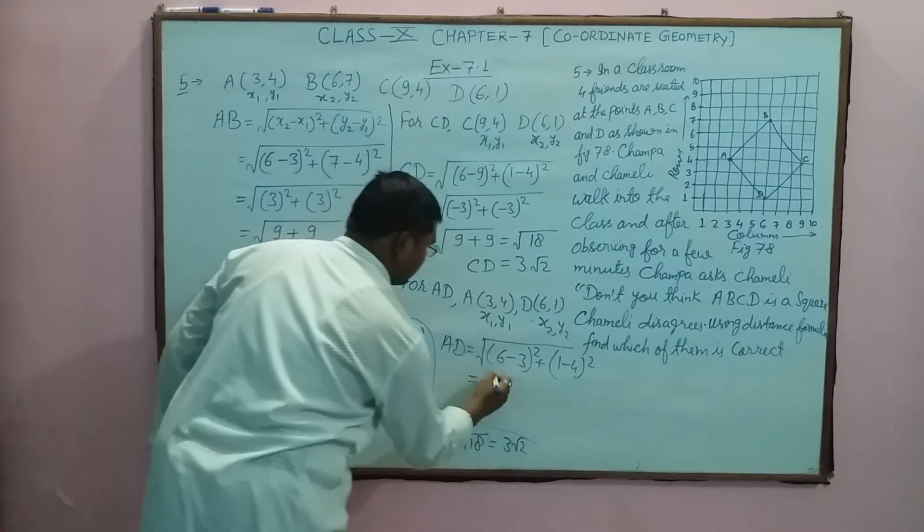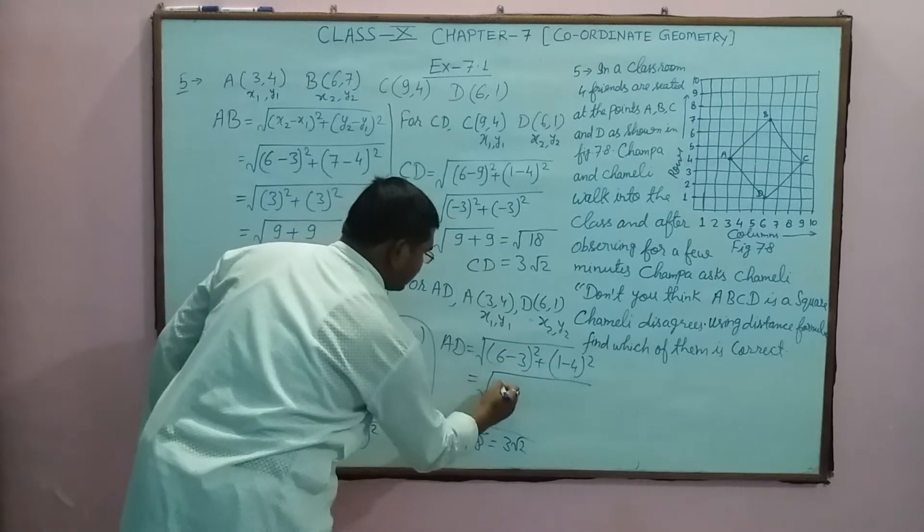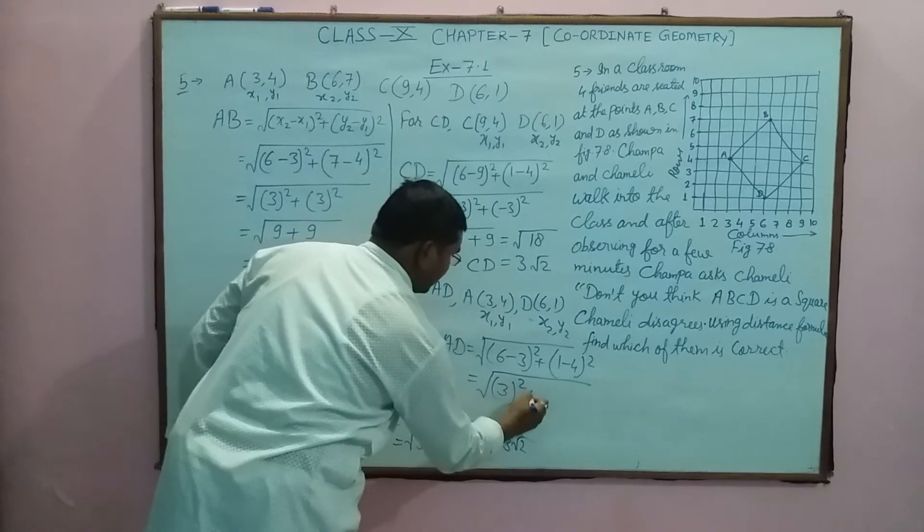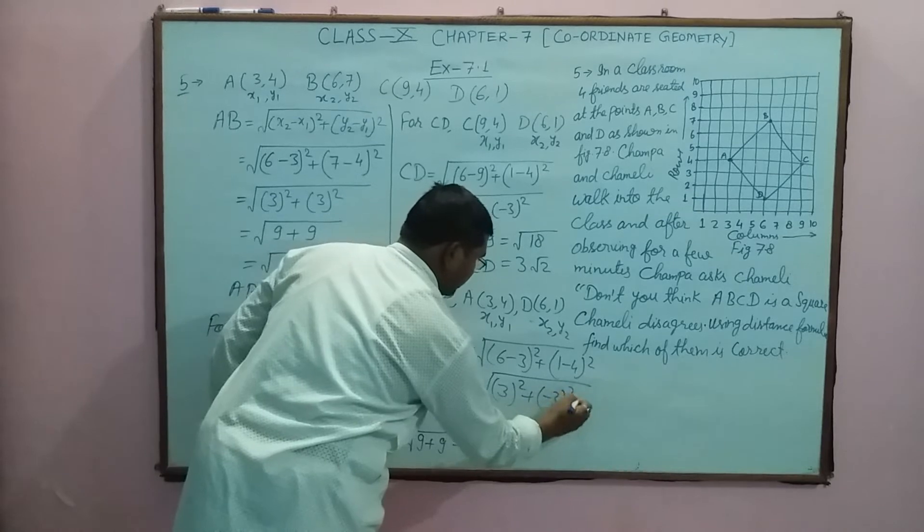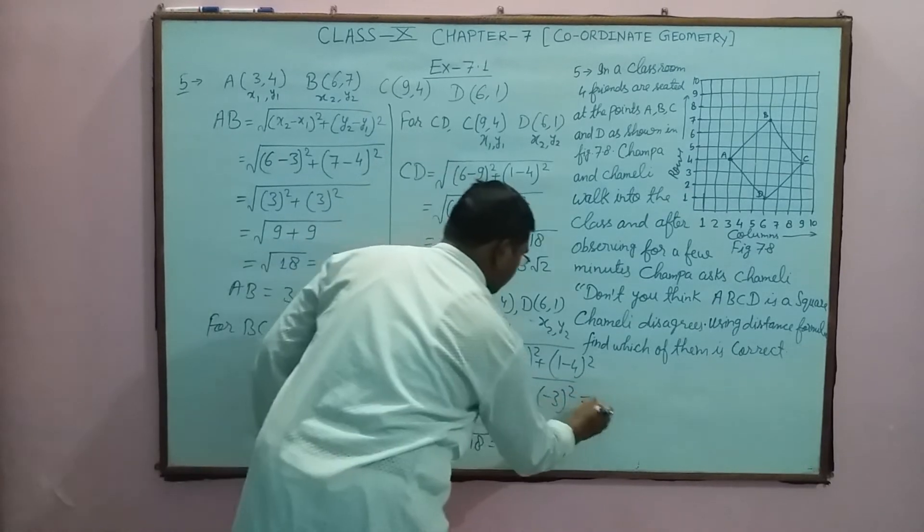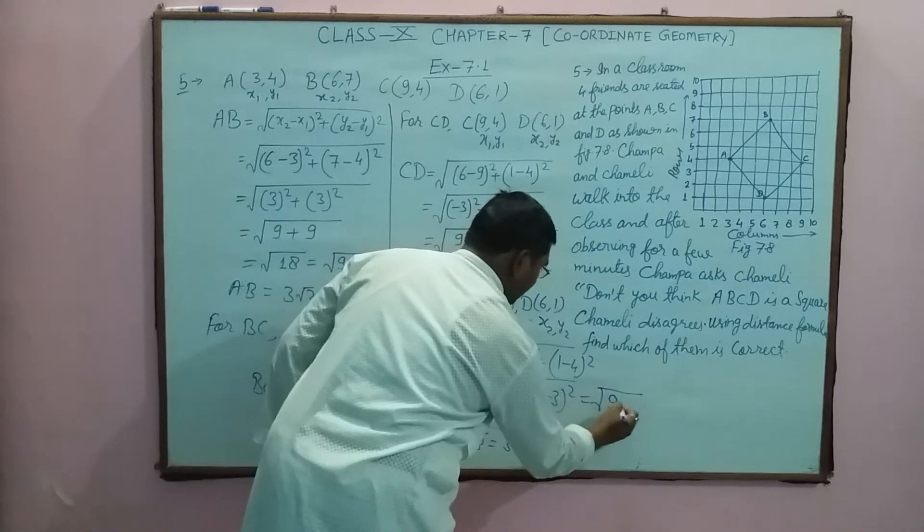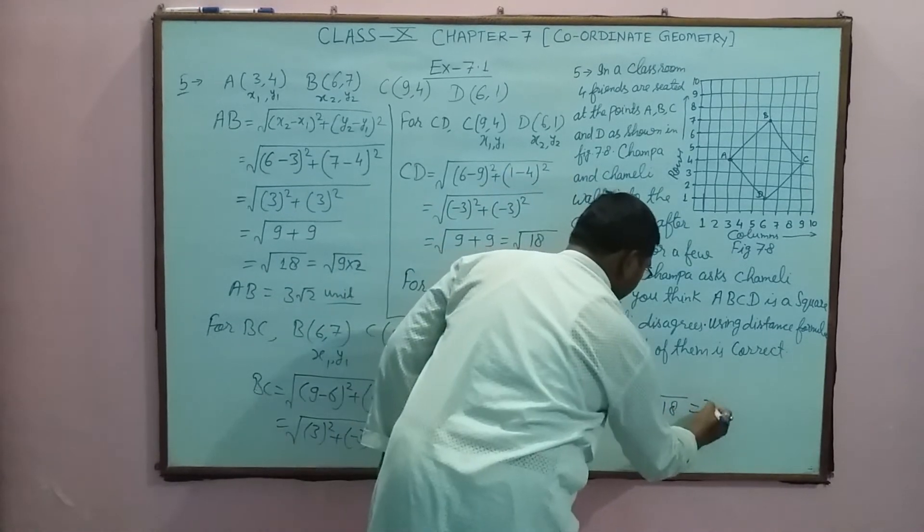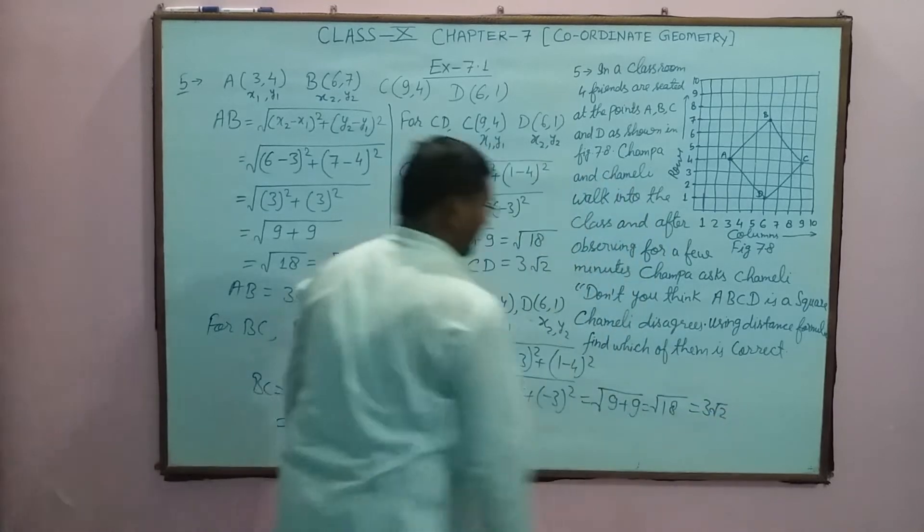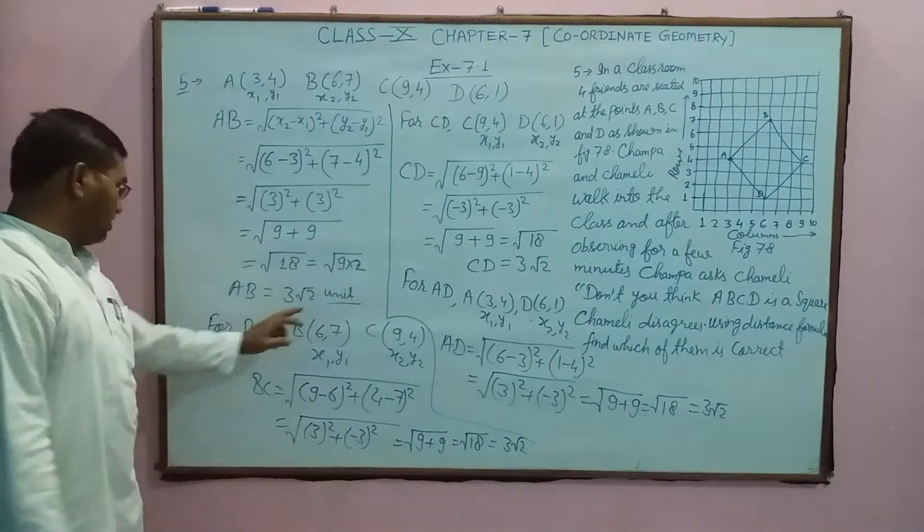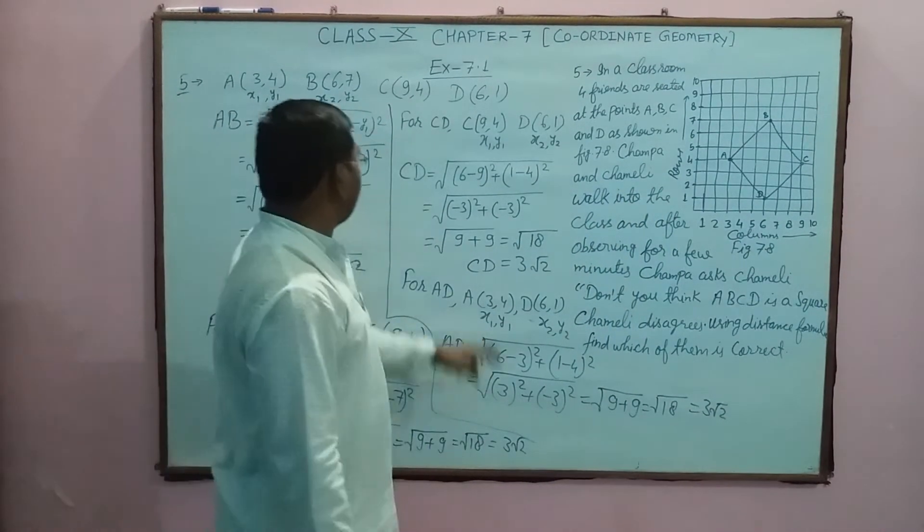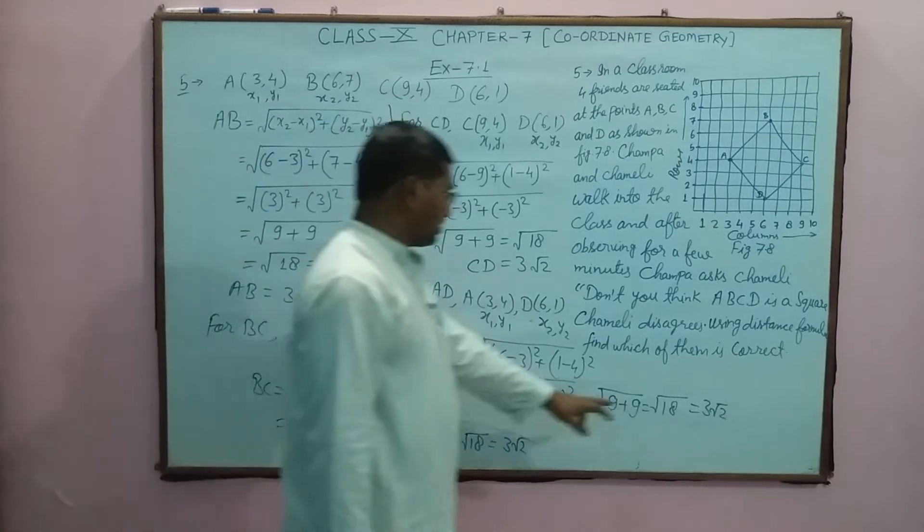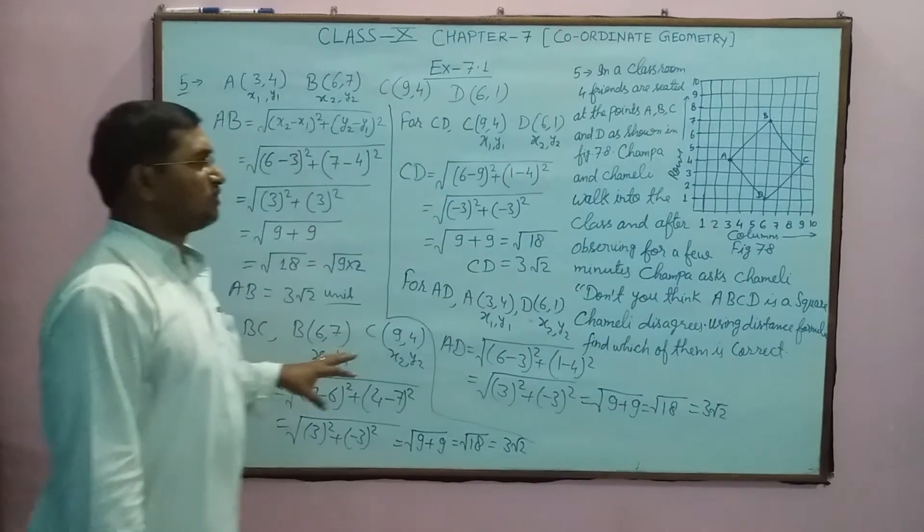Now square root: this is 3 squared plus minus 3 squared. So what will it be? Square root of 9 plus 9, this is square root 18, so it becomes 3 root 2. Look, AB is 3 root 2, BC is 3 root 2, CD is 3 root 2, and AD is 3 root 2. All four sides are equal.